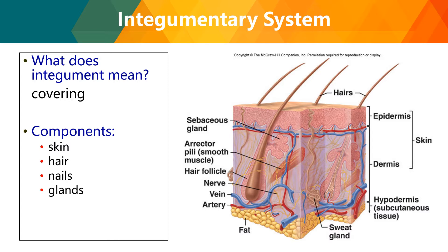Other structures found in your skin include hairs, the sebaceous glands, erector pili muscle, hair follicle, nerves, veins and arteries, and of course your sweat glands. The appearance of the integumentary system can indicate physiological imbalances in your body.